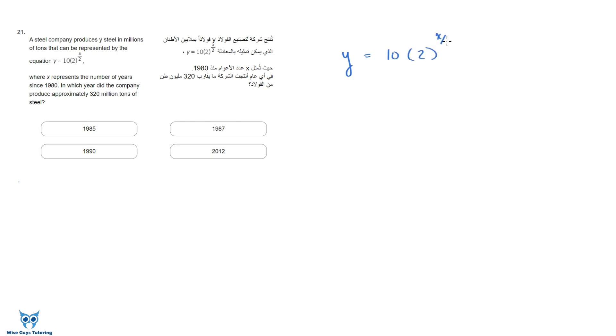So let me set this equation up. This is 320 equals 10 times 2 to the x over 2. Now they want to know in what year did this happen. What I want to know for now is what is x, how many years since 1980 led to a production of 320 million tons of steel. So basically, let's solve for x and then we'll figure out that last step. First thing I'm going to do, I'm going to divide both sides by 10 because that's the one that's multiplying my 2.